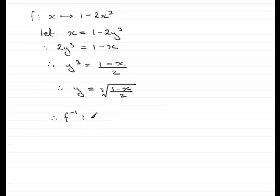So that would be the inverse function is such that x gets mapped onto this function here. That would be the cube root of 1 minus x all over 2. And there you have the first part of the question.